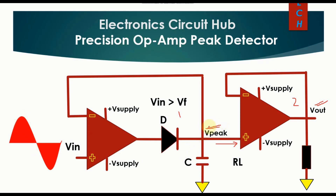For the positive half cycle, you get the V-peak value at the capacitor, and that same voltage appears at the inverting terminal — that is V-peak. Whenever your input signal is less than V-peak, the diode anode is less positive than the diode cathode, so this diode works in reverse bias and behaves like an open circuit. Now the op-amp works in open loop configuration — there is no closed loop — and the output of this operational amplifier V-naught equals minus V-sat.